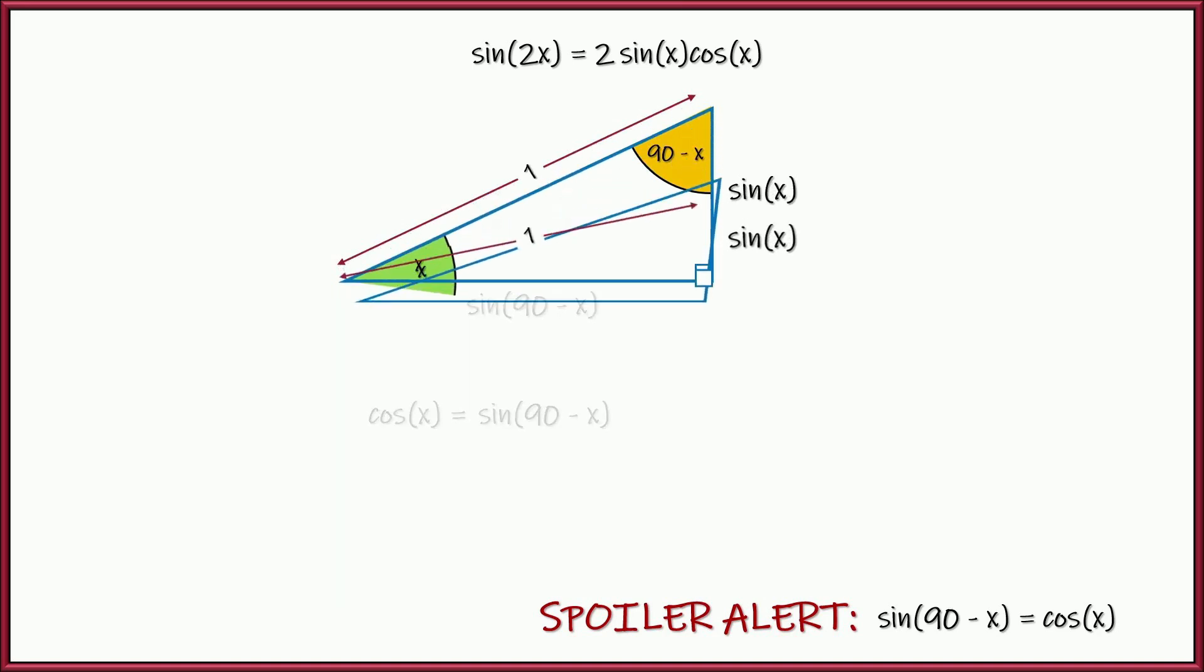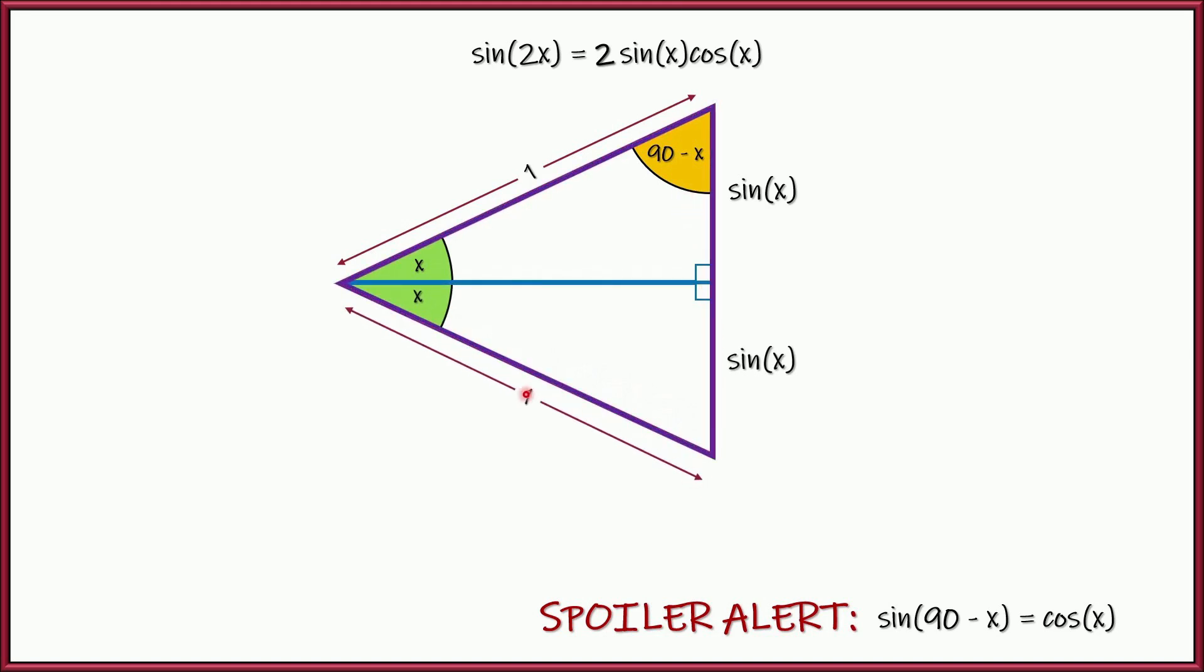But now let's go ahead and take our triangle, double it, and make a larger isosceles triangle like this. That makes this angle 2x. Right? And this side, this opposite of 2x, 2 times the sine of x. Sine of x plus sine of x is 2 times the sine of x.